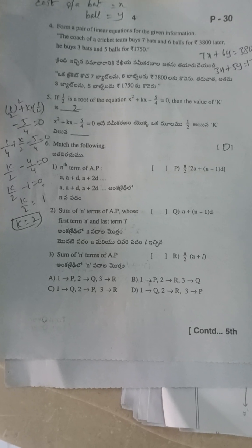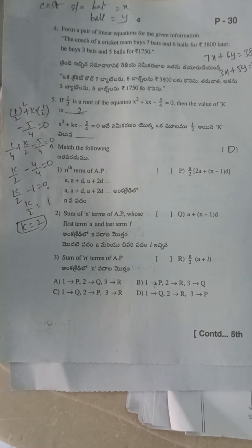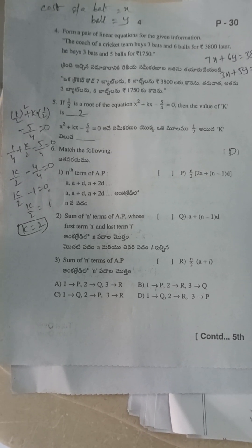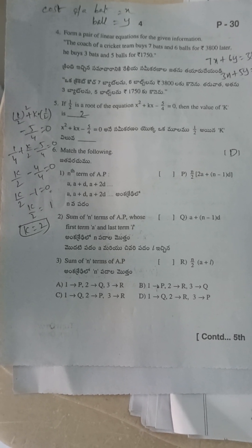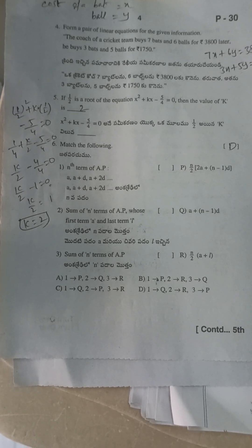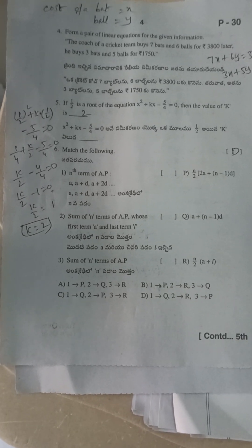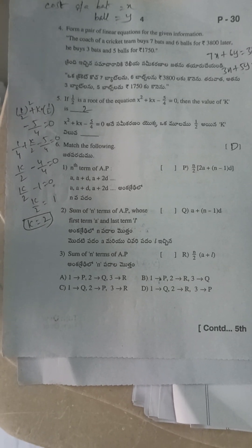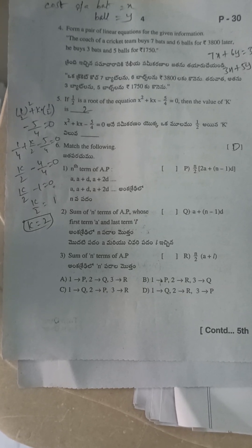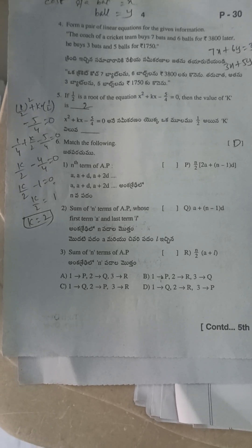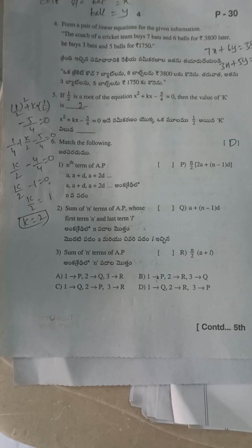Sixth question: match the following. The nth term of an AP is a + (n−1)d. The sum of n terms of an AP with first term a and last term l is n/2 × (a + l). The sum of n terms of an AP is also n/2 × (2a + (n−1)d). The answer is option D.